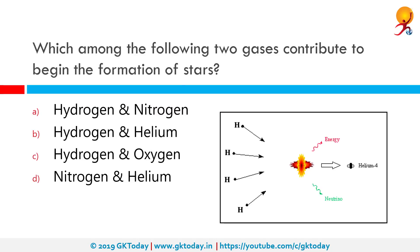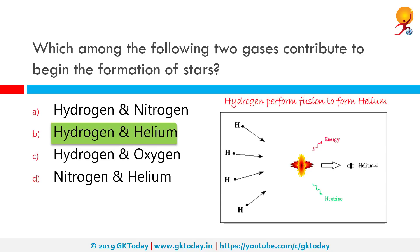Hydrogen and helium contribute to the beginning of star formation. Hydrogen fusion — the nuclear fusion of four protons to form a helium-4 nucleus — is the dominant process that generates energy in the cores of main sequence stars. It is also called hydrogen burning, which should not be confused with chemical combustion of hydrogen in an oxidizing atmosphere. This burning is strictly nuclear.